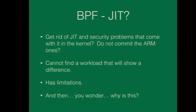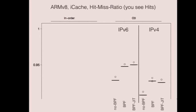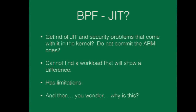With 50 different microarchitectural and architectural numbers basically all telling you the same thing — the JIT doesn't do much or doesn't help — across different filters, different workloads, different packet sizes, the conclusion gets to the point where: can we get rid of the JIT? It's a security concern in the kernel, we don't use it by default, the ARM version wasn't committed, we can't find a workload that benefits, and it has the limitation that it only works for certain types of mbufs.